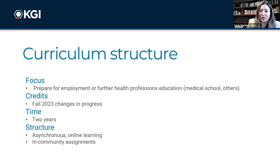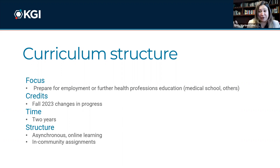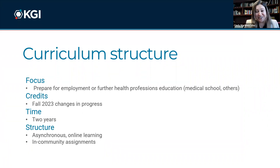Our program is two years — you enroll in fall and spring of both years. We originally started with a synchronous format, meaning you showed up online at a set time, like Monday, Wednesday, Friday from 4 to 6 p.m. We changed to asynchronous because many students have jobs or want to volunteer simultaneously. We're also reducing the curriculum units — currently 54 units — to be better suited for people who want to continue to work full-time, part-time, volunteer, or prepare for the MCAT. We'll officially announce the new unit count once we receive WASC approval, but the two-year timeline remains the same.